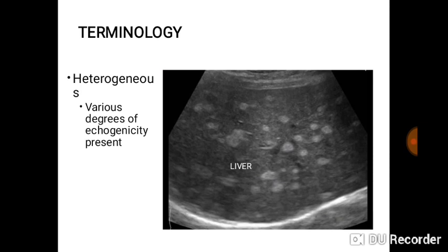'Heterogeneous' or 'heterogeneity' refers to various degrees of echogenicity within the same organ. For example, looking at the liver: it has multiple hyperechoic nodules compared to other areas that are hypoechoic. Both high echo and low echo are present in the same organ — so we say this is heterogeneous.